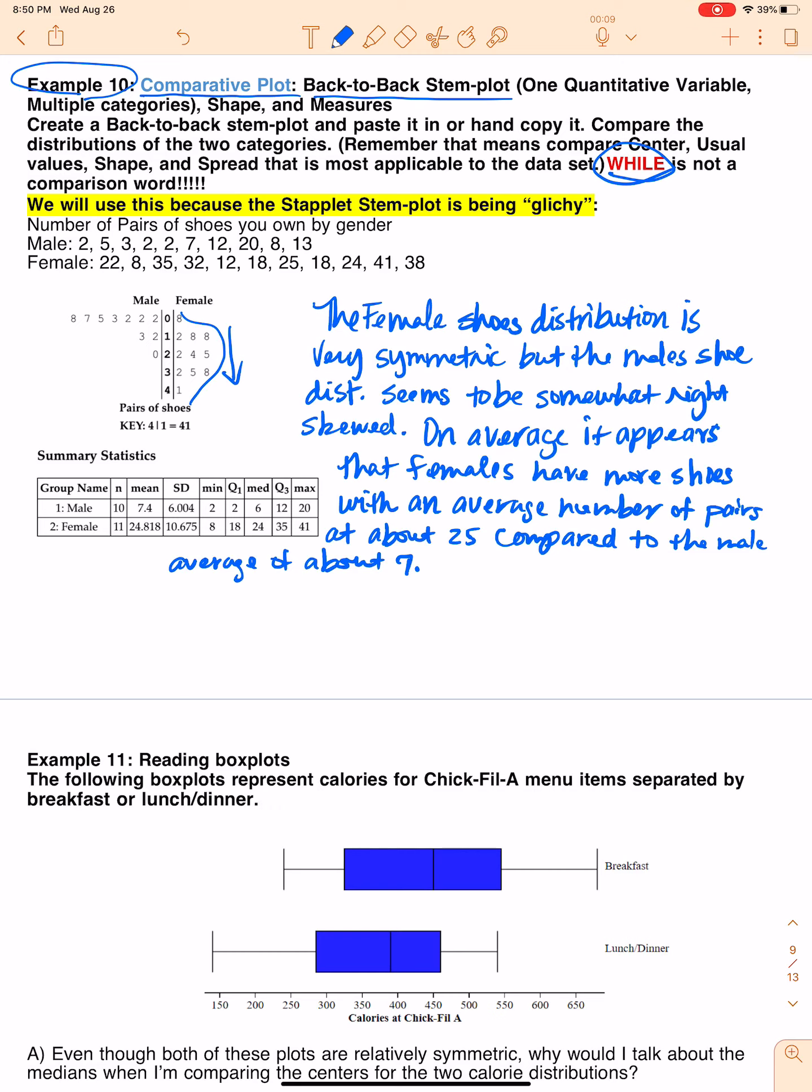Okay, so I'm calling out something obvious here. I'm saying on average, it seems that the females have more shoes on average or overall, there's lots of different ways you can say that. And to support that claim, I'm going to say well, the average female has 24.8 or about 25 pairs, whereas the males just have about seven. So I'm making a statement that's obvious in the graph and in the summary statistics, but then I'm backing it up with my math.